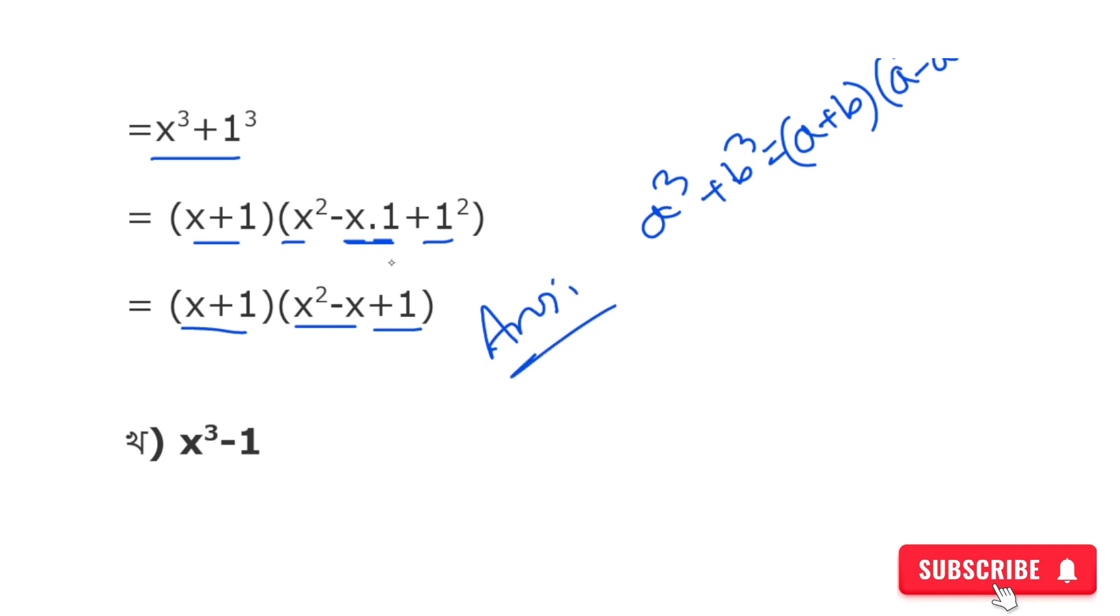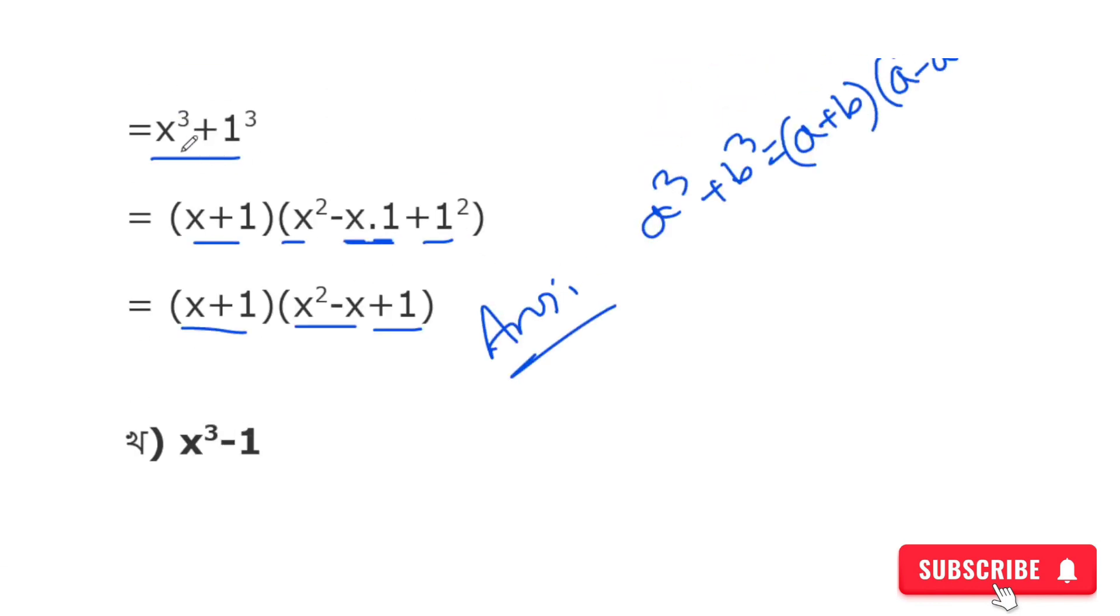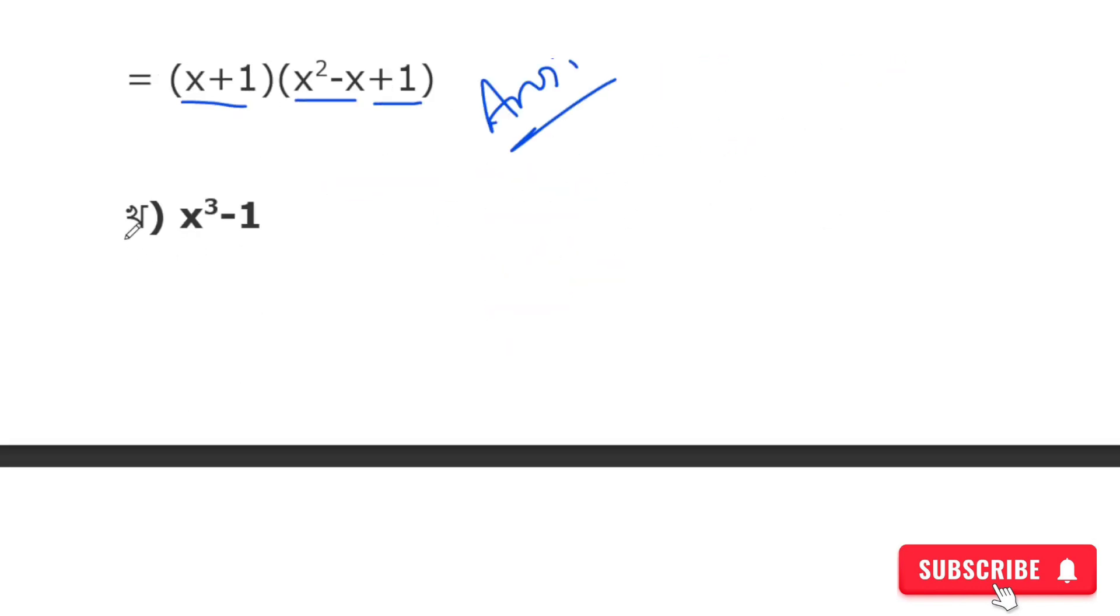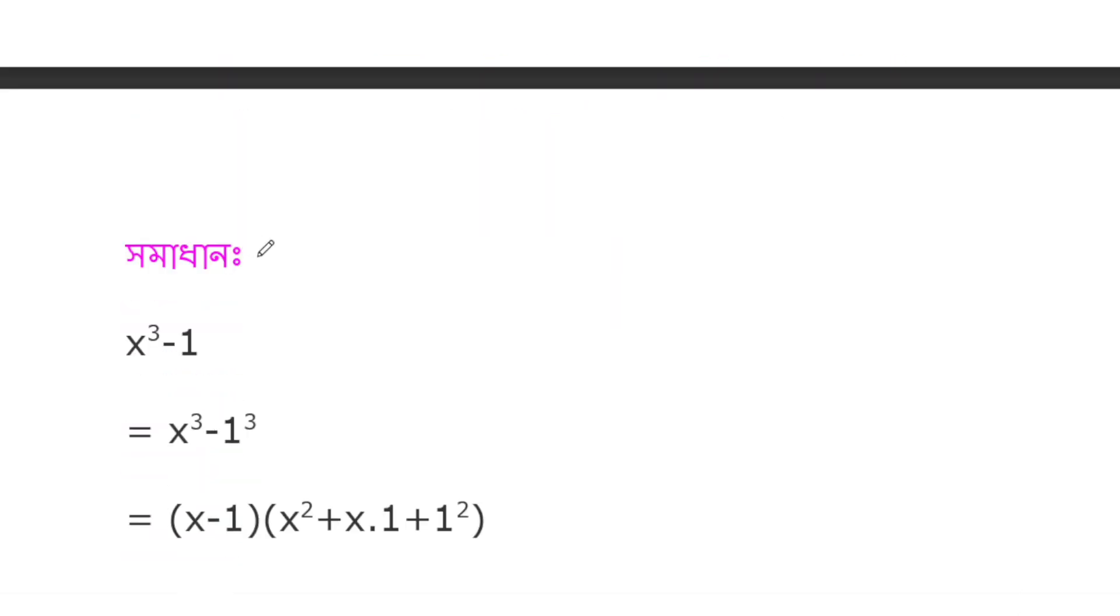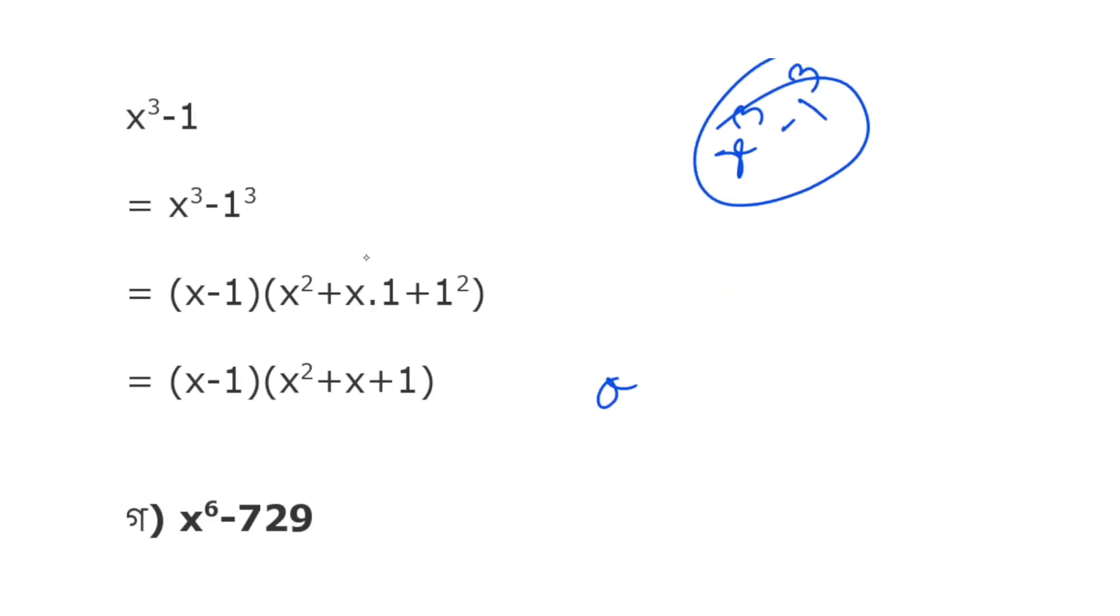Now for the second problem: x³-1. I'm going to factor this using the difference of cubes formula. x³-1 = x³-1³. The formula for a³-b³ is (a-b)(a²+ab+b²).